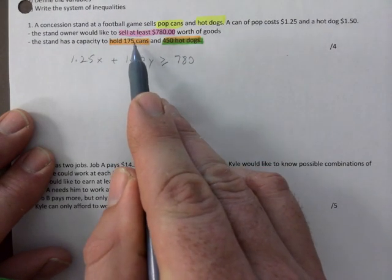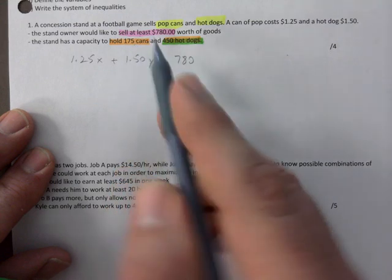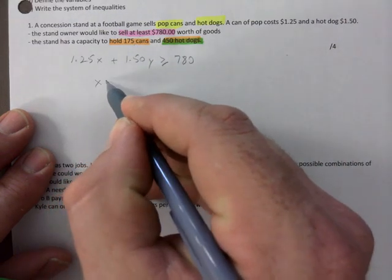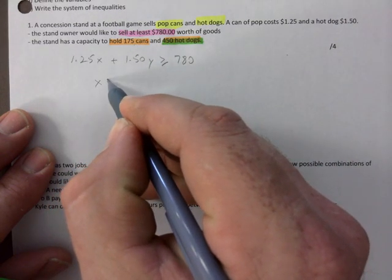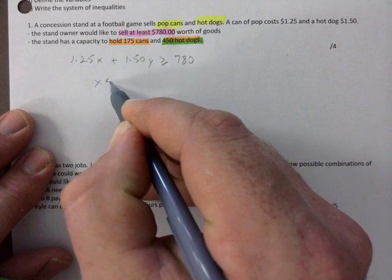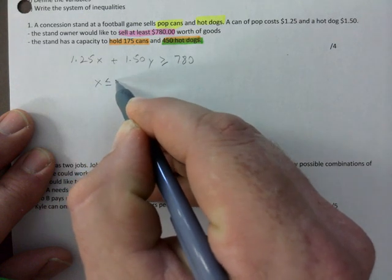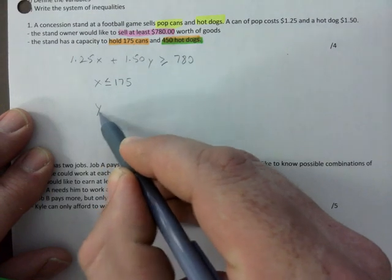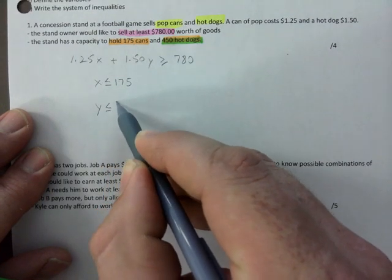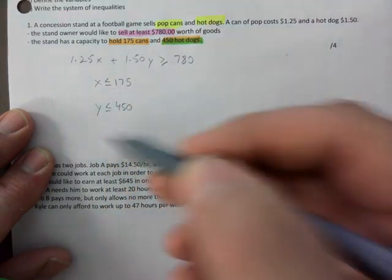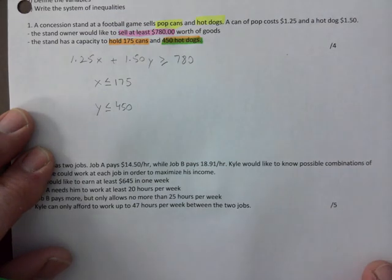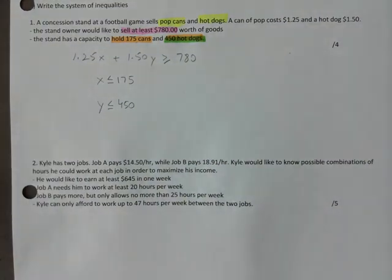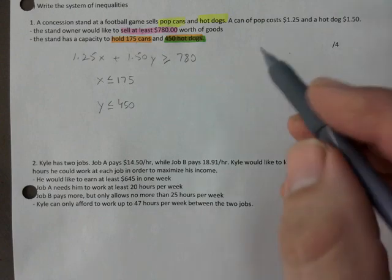This one should be on its own. The number of cans — capacity to hold — must be less than or equal to 175, and the other one for hot dogs must be less than or equal to 450. Don't try to combine them; split them up.